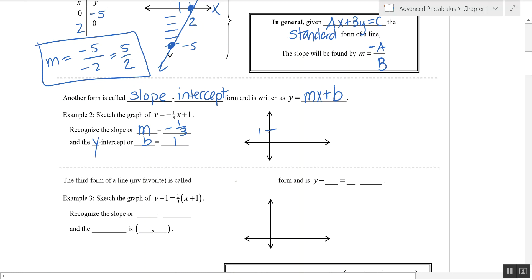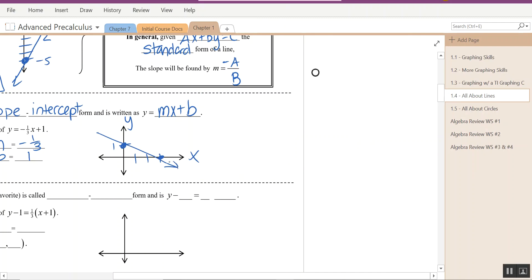So, I'm going to say that is my y intercept right there. I'm going to go down 1 over 3. Do not go to the left ever. So, that's a quick graph. We've got that line.